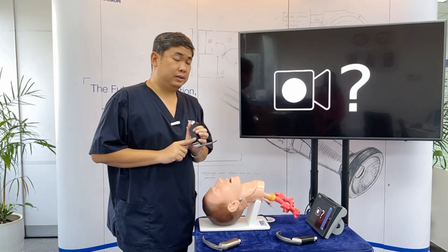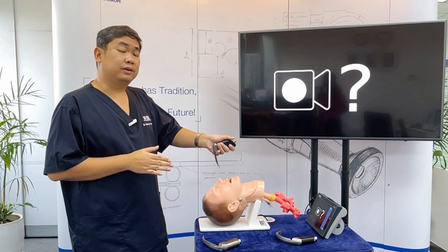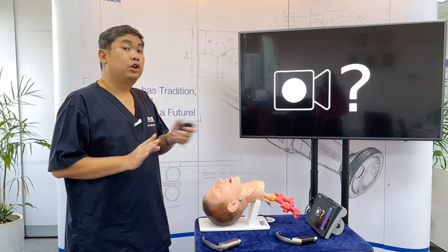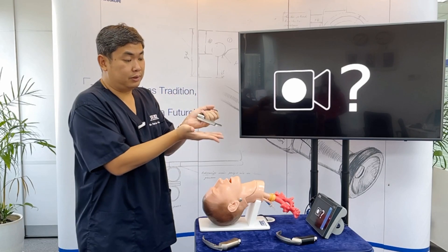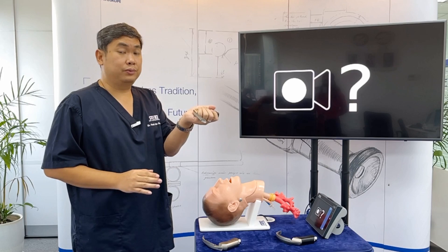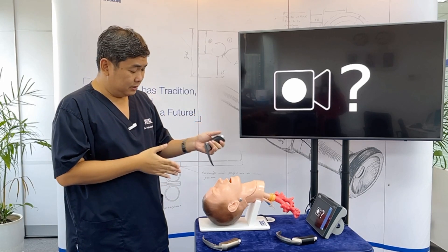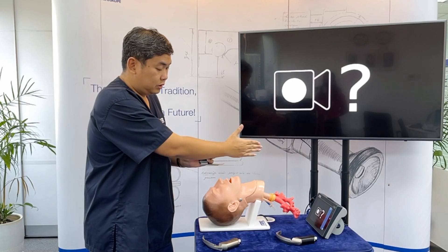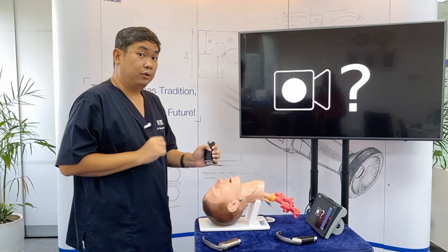If you are using a straight blade such as the Miller blade, you enter at the side of the mouth but you don't swipe the tongue. If you swipe, the tongue will infold over your view. So you bypass the tongue and insert it on the side, going in the direction of the vocal cords.